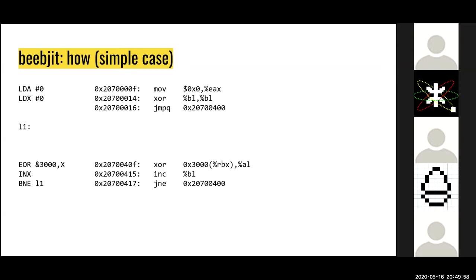But you'll notice there are a bunch of things it's not doing that it will need to do to be accurate. On the 6502, an interrupt could come in at any moment after any of those instructions — and you'll see there's no interrupt checking, so that's a problem. In parallel to the 6502, the VIA timer chip is ticking away and needs to be maintained accurately in lockstep with the 6502 code. Otherwise you can forget loading Kevin Edwards protection.